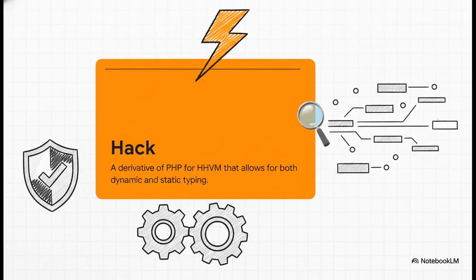All that means is that developers can say, hey, this variable should always be a number, or this one should always be text. It sounds simple. But that one rule lets the system catch a whole bunch of potential bugs before the code ever goes live. For a code base as big as Facebook's, that kind of safety net is a lifesaver.